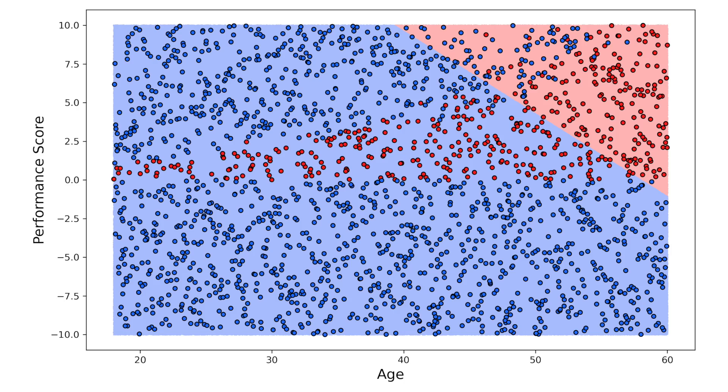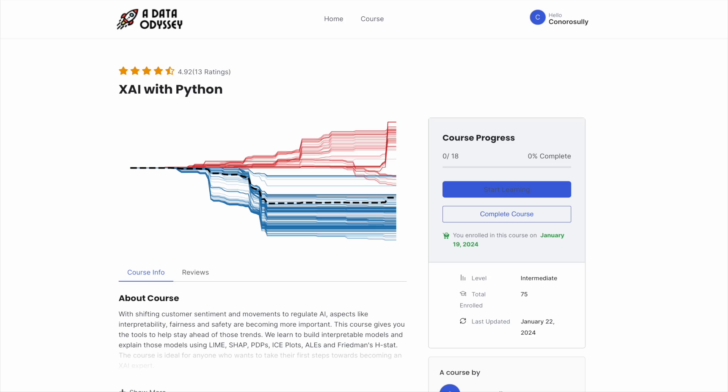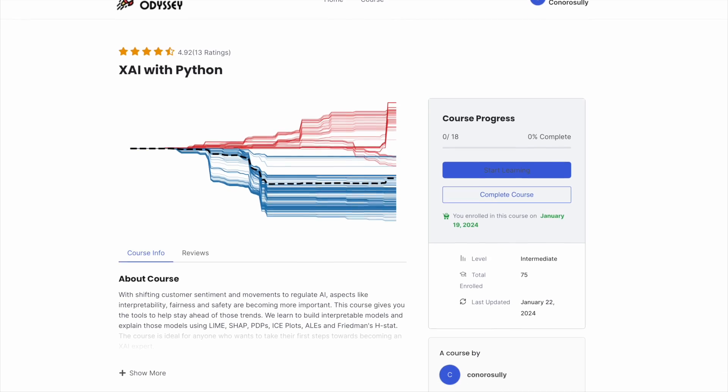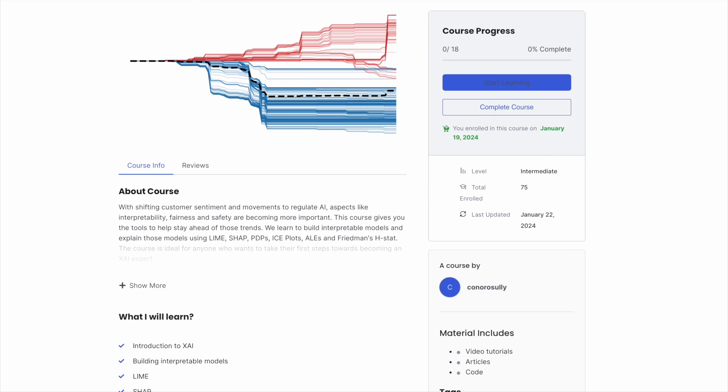We will see how by comparing the ability of logistic regression and a deep neural network to model a non-linear decision boundary. We will see that even though logistic regression is a linear model, we can use feature engineering to model non-linear relationships. We won't go over the code to do this, but you can find a link to it in the description. If you're interested in this type of content, then make sure to sign up to my newsletter in the description.